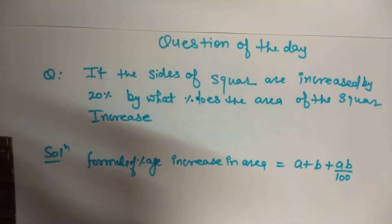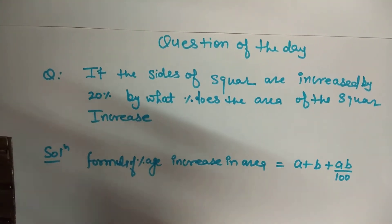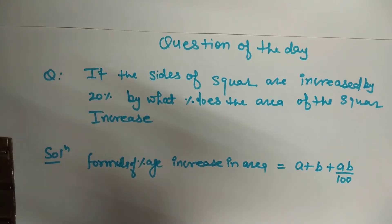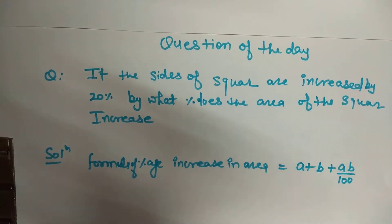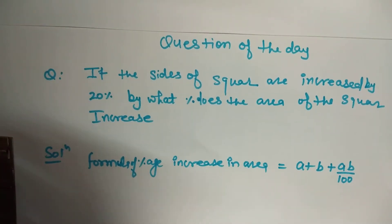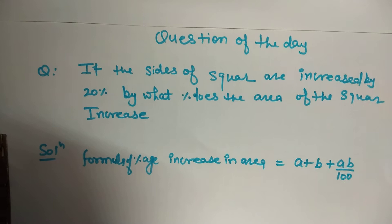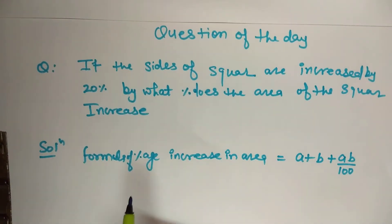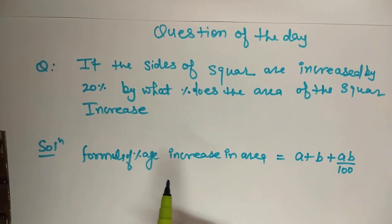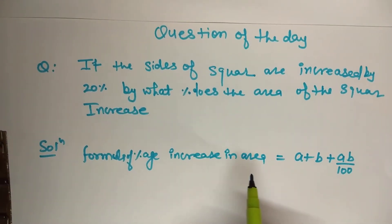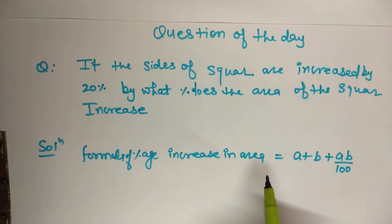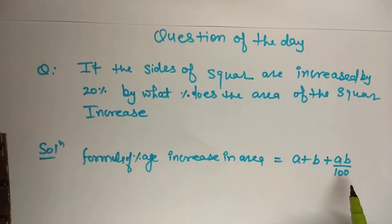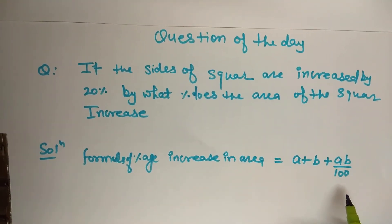We have to find kitna area change hoga uski square ki sides mein 20% increase karne par. The formula for percentage increase in area is a plus b plus ab by 100.